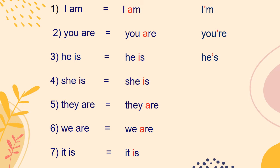Fourth: 'She is.' The letter 'i' of the second word is removed and the apostrophe is added. Remember, after adding the apostrophe, write the two words as one word. Next: 'They are.' The letter 'a,' which is the first letter of the second word, is removed and the apostrophe is added. The two words are written as one word.